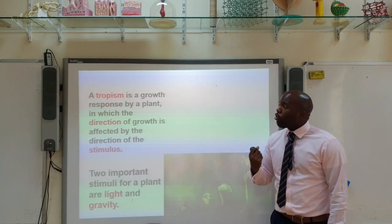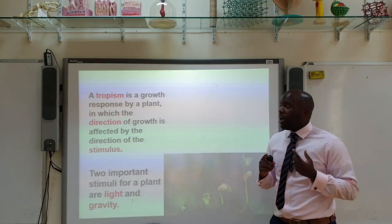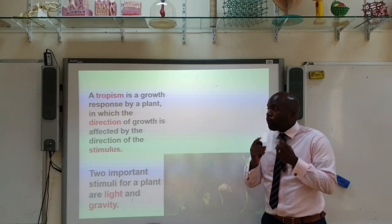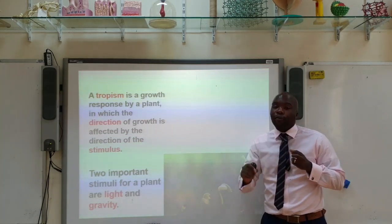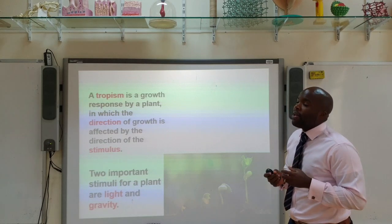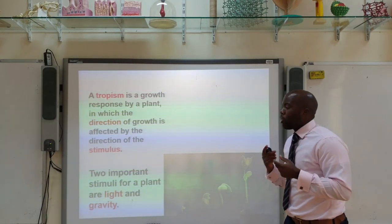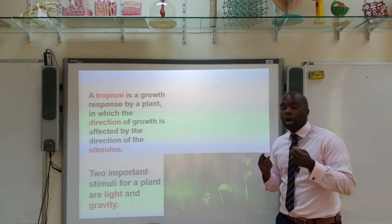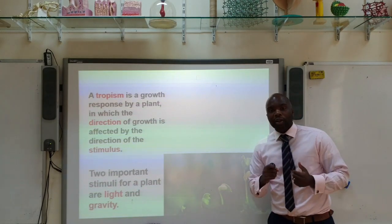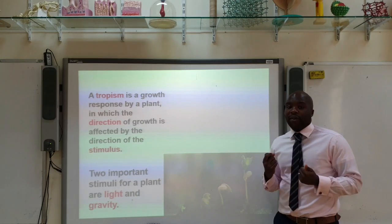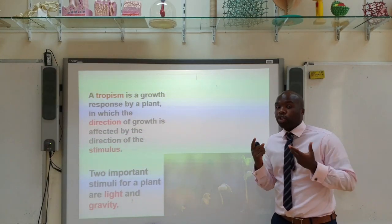A tropism is a growth response by a plant in which the direction of growth is affected by the direction of the stimulus. Two important stimuli that you must know about in plants are light and gravity. Let's look at how light and gravity can affect the rate or direction of growth — in other words, how they cause tropisms in plants.